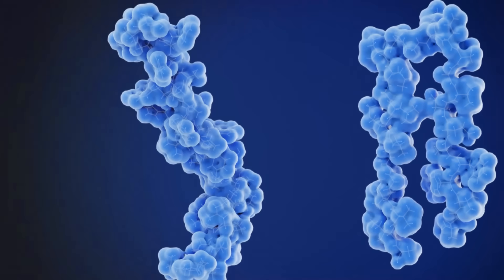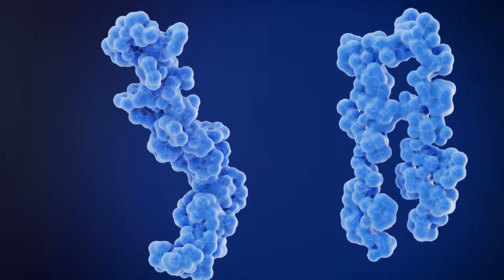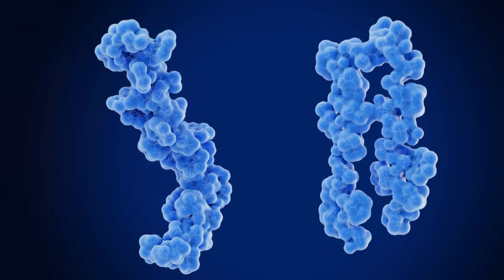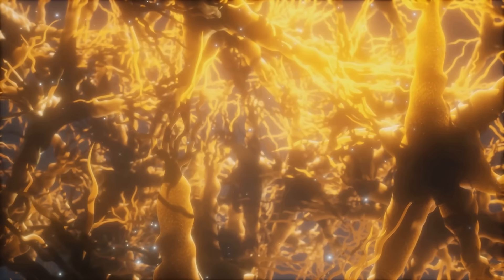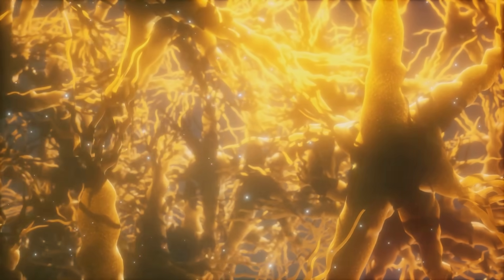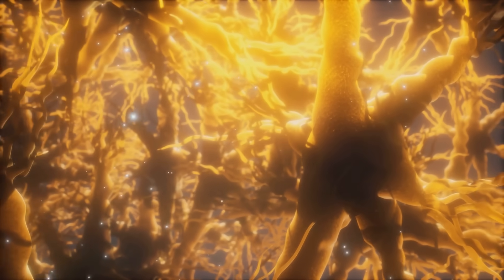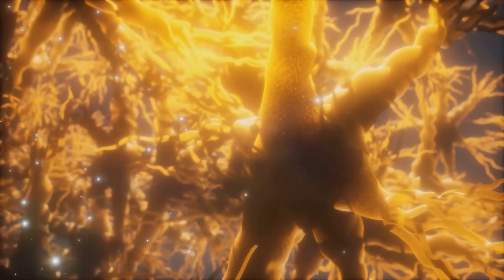So what exactly is beta amyloid? It's a protein fragment produced in the body, especially in the brain. Think of it as a byproduct when a larger protein, APP, gets snipped by enzymes.